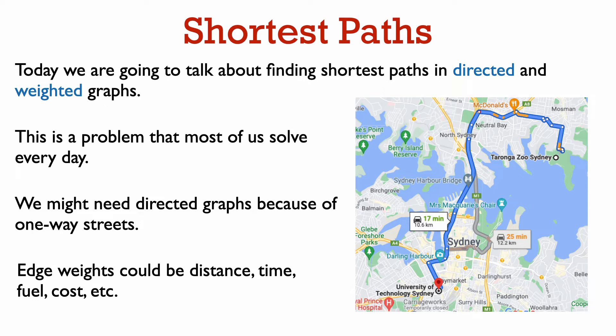Solving a shortest path problem in a directed and weighted graph is a problem that we solve all the time. This is what Google Maps is doing when it suggests driving directions, for example going from UTS to Taronga Zoo. In this Google Maps picture, the length of the path is given both in terms of time and distance. Edge weights can be distance, time, or cost — for example taking into account fuel costs and any tolls you might have to pay — and we can use the same algorithm to find the shortest path with respect to any of these measures. Note that Google Maps needs to model this problem with a directed graph because of the presence of one-way streets and potentially also varying traffic when traveling on a road in opposite directions.